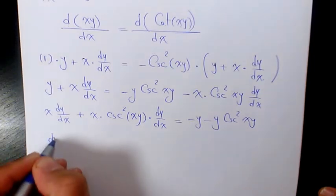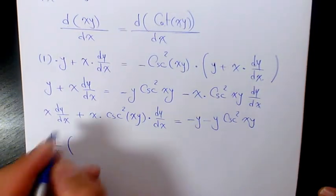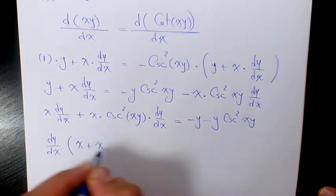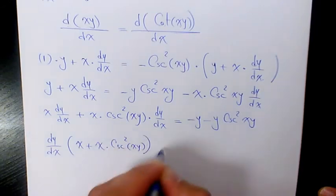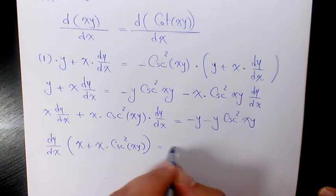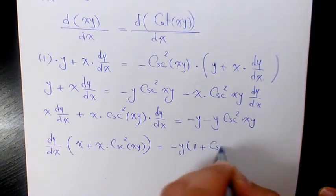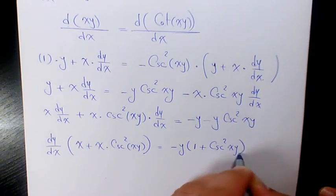Then I factor dy over dx. It's going to be x plus x times cosecant squared xy equals negative y. I factor negative y: one plus cosecant squared xy.